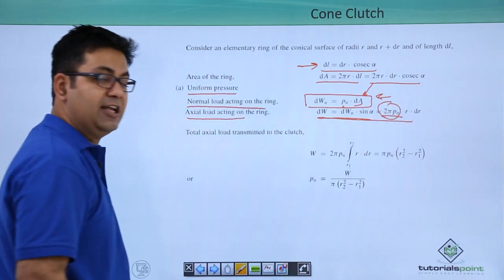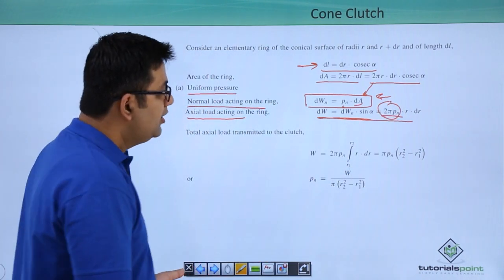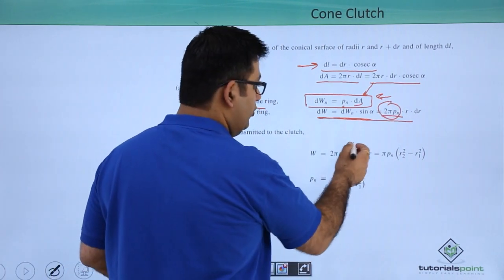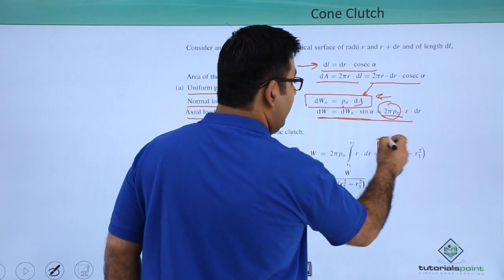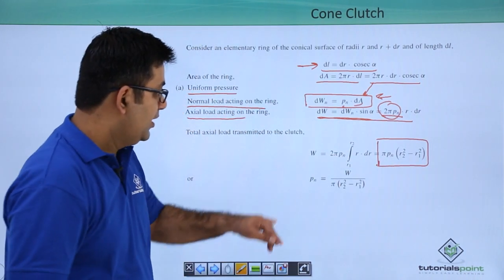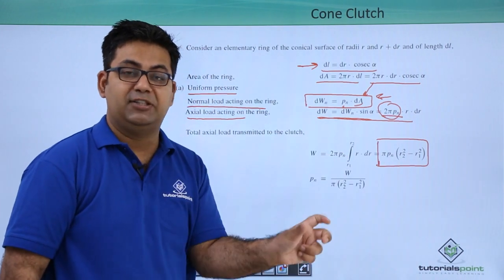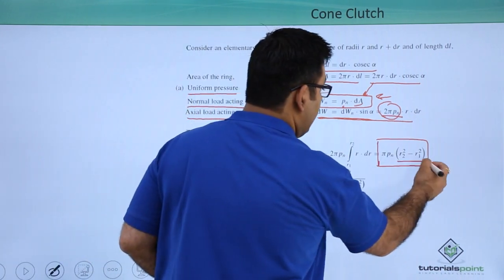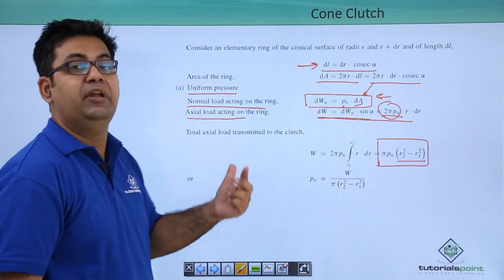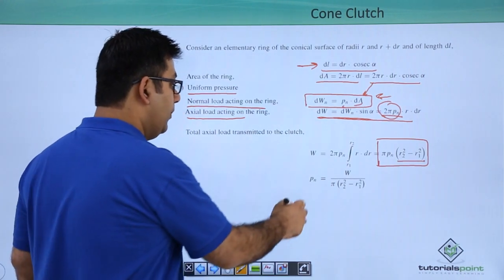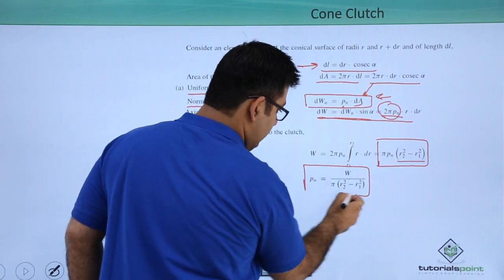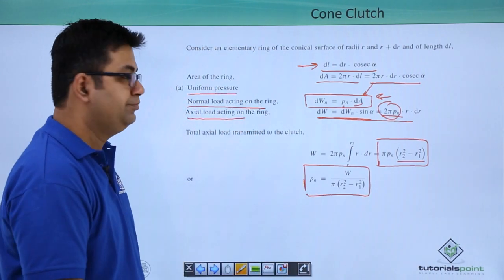So your axial load becomes this. Total load would be an integral, so we will keep this outside the integral sign because this is a constant value, and you will get r dr from r1 to r2. This will be the final value: W equals pi pn times the difference of squares of the radii, and the normal pressure would be this. Make a note of this.